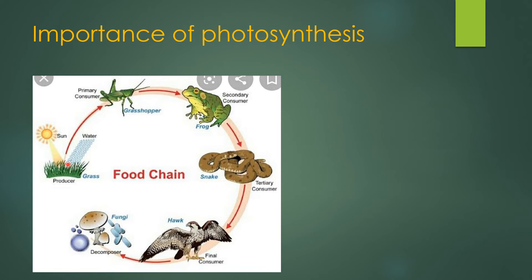The producer produces glucose molecules with the help of sunlight, so here light energy is converted into chemical energy. When the grasshopper consumes the green plants, this energy is transferred to the grasshopper, and when the grasshopper is consumed by the frog, it is transmitted to the frog, then to the snake, and then the hawk. So the energy continuously flows from the producer to the consumer. If there is no photosynthesis, there will be no flow of energy in living organisms, the food chain, or the ecosystem.